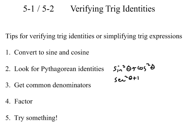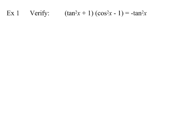Tip three: if you're adding or subtracting fractions, try to get common denominators to simplify algebraically. Tip four: factor, again thinking algebraically. Tip five — the most obvious but most important — just try something. A lot of times students just look at these and say 'I don't know what to do,' but you need to try something first.